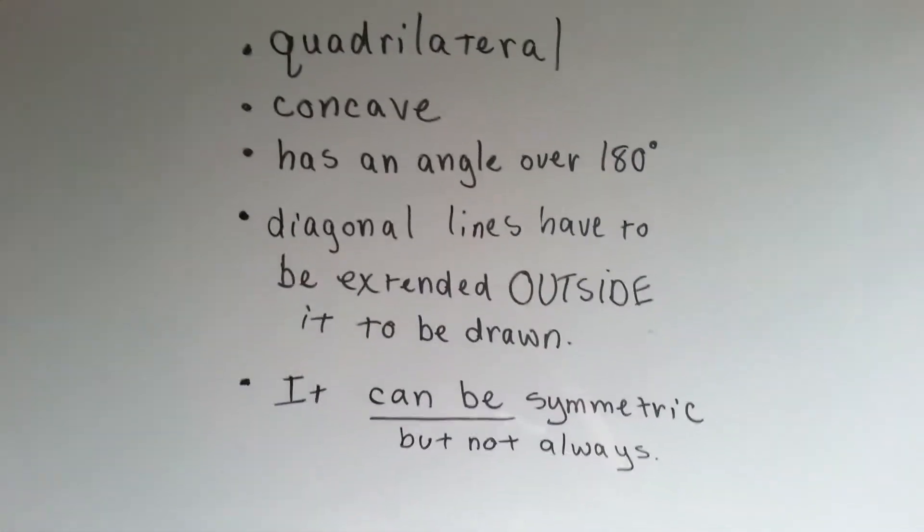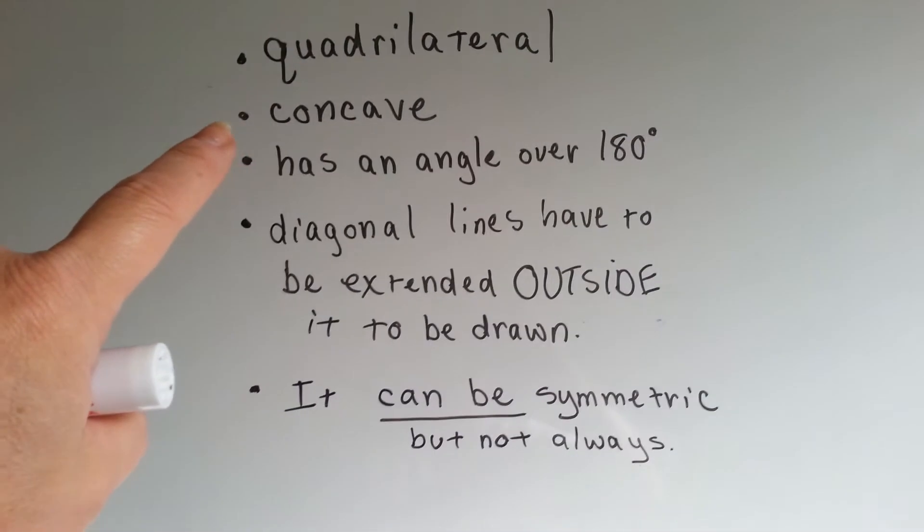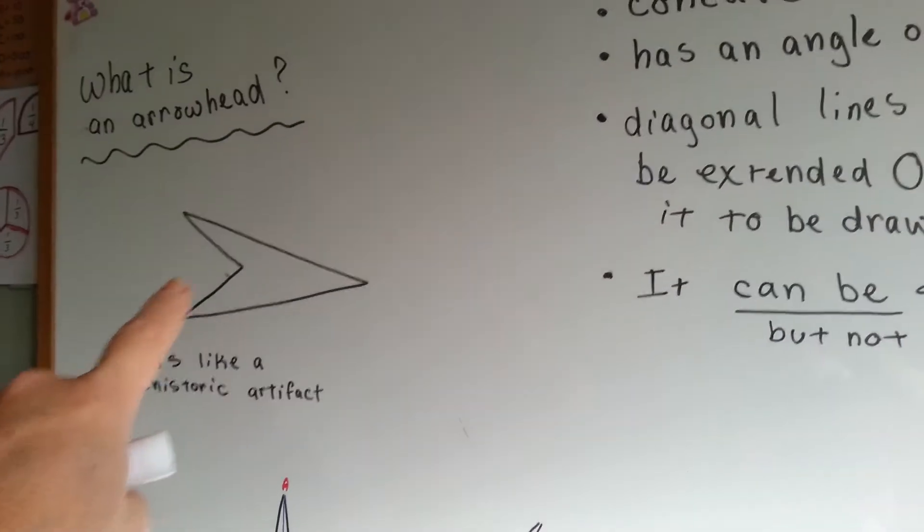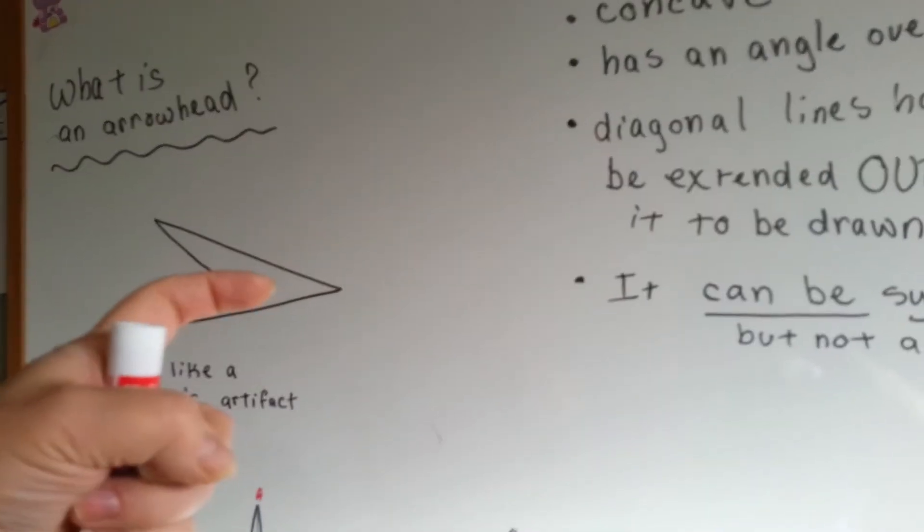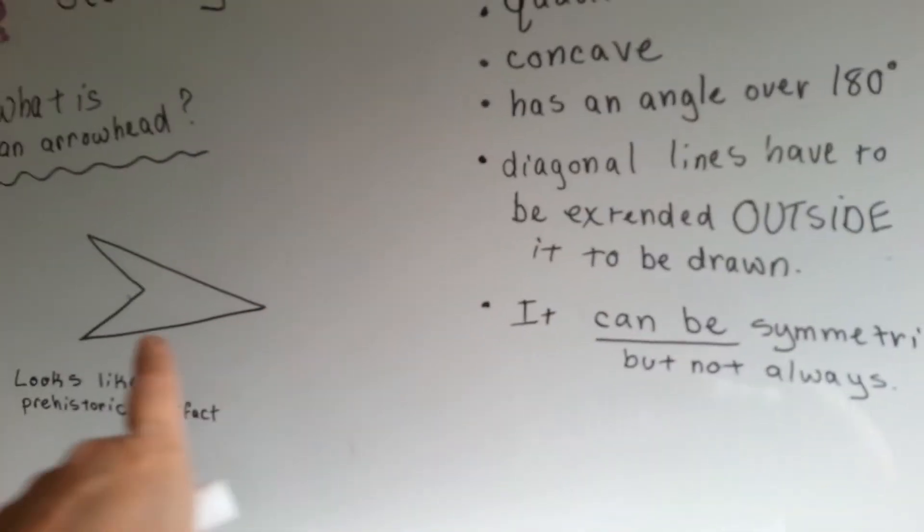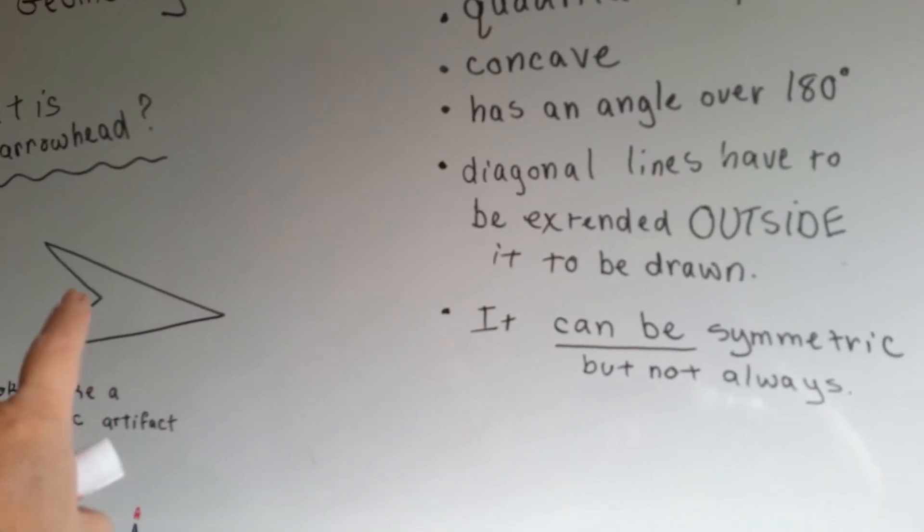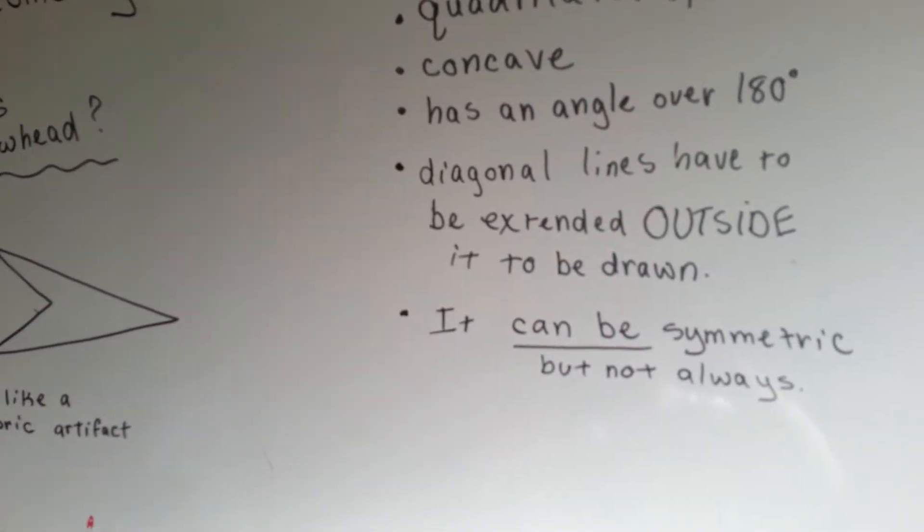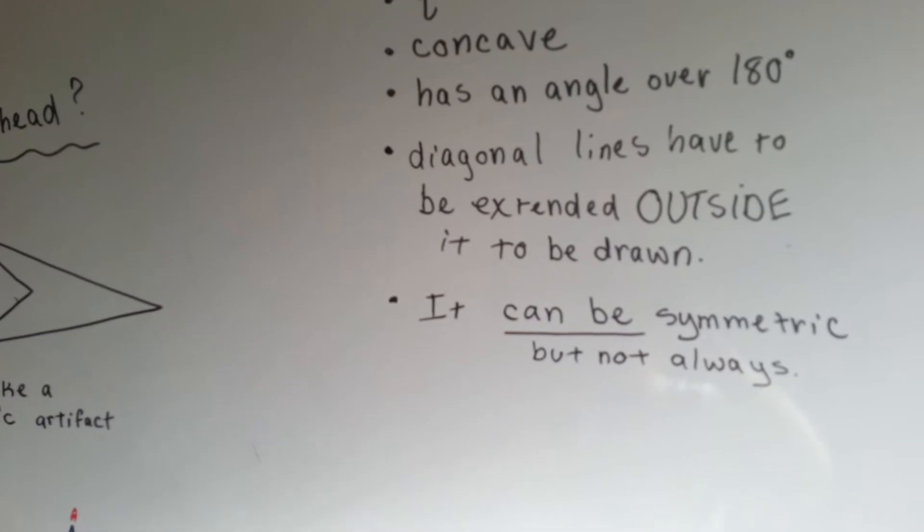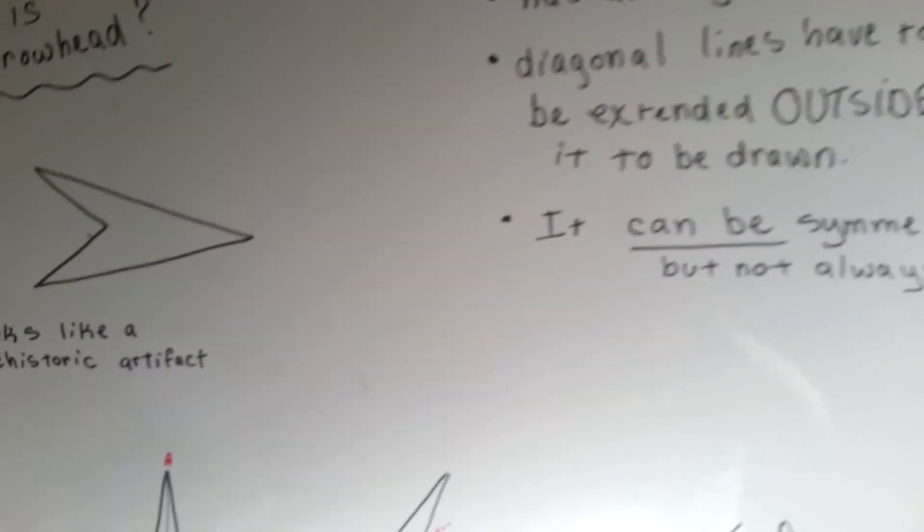It's quadrilateral. It's got four sides. It's concave because of this angle dents inward. It has an angle over 180 degrees, which is the concave one, and the diagonal lines have to be extended outside it to be drawn.